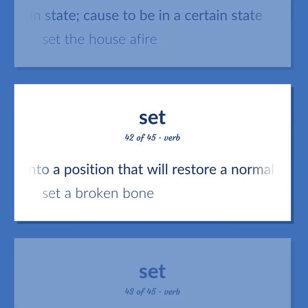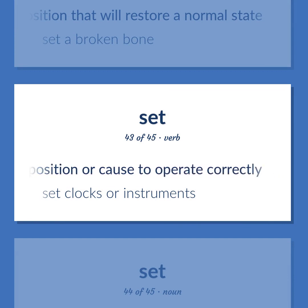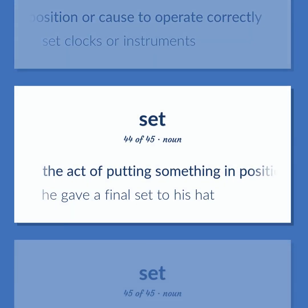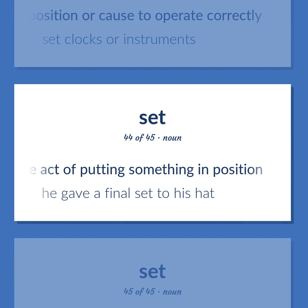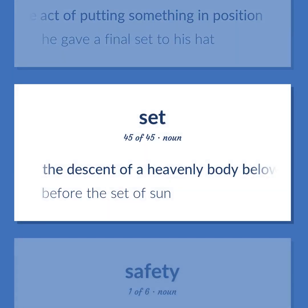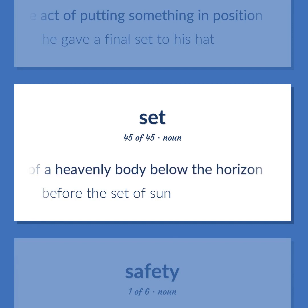Set: Put into a position that will restore a normal state. Example: Set a broken bone. Set to a certain position or cause to operate correctly. Example: Set clocks or instruments. The act of putting something in position. Example: He gave a final set to his hat. The descent of a heavenly body below the horizon. Example: Before the set of sun.